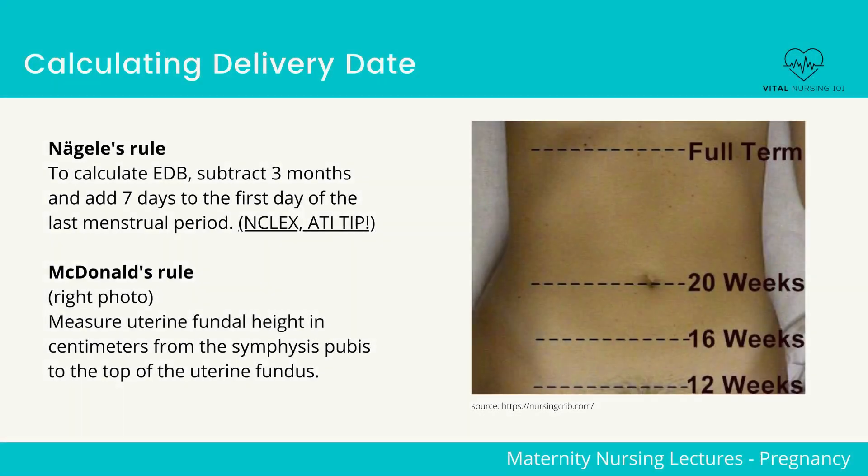Calculating delivery date. Nagel's rule — this is a must-know for nursing exams. It is a formula for calculating the estimated date of birth. To calculate EDB, subtract 3 months and add 7 days to the first day of the last menstrual period.